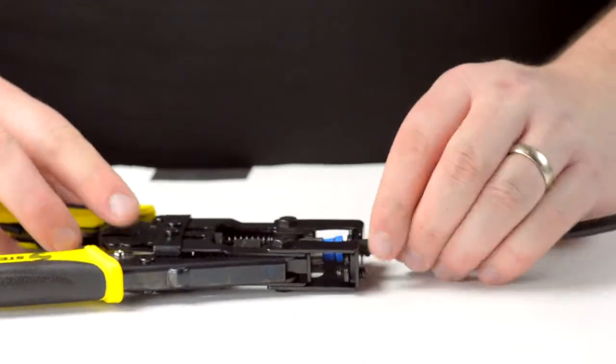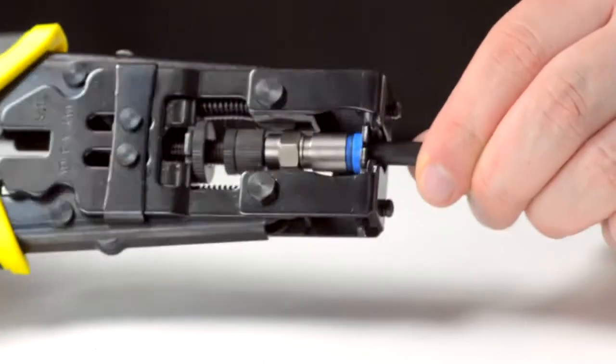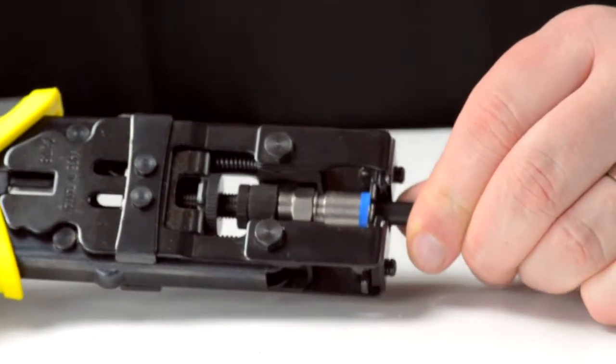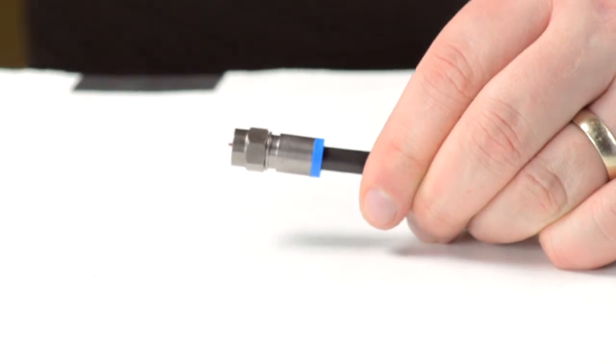Insert the connector into the compression tool and firmly squeeze in order to make termination. This will compress the connector, securing it to the cable jacket.